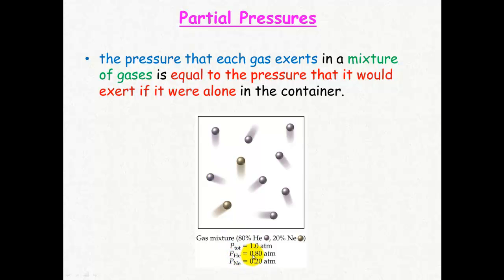Helium has a pressure of 0.8 atmospheres. Neon contributes 0.20 atmospheres so the total pressure is one atmosphere, 0.8 plus 0.2. The pressure of each gas exerts is equal to the pressure it would exert if it was alone.